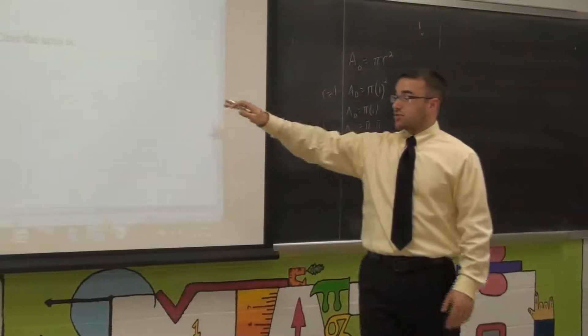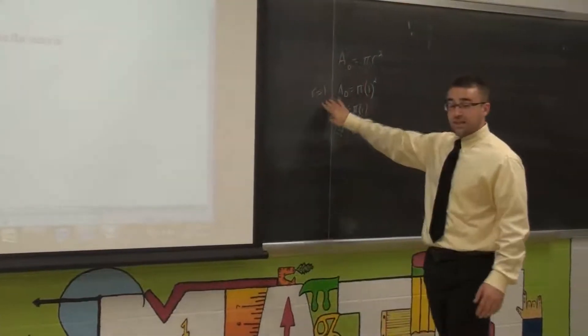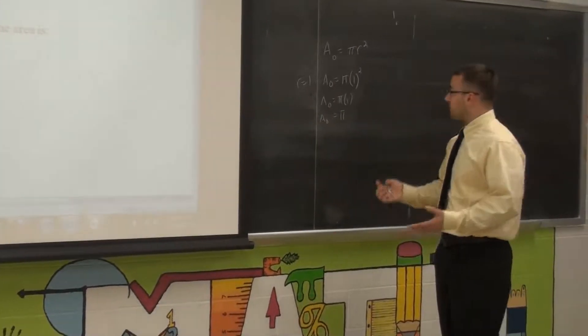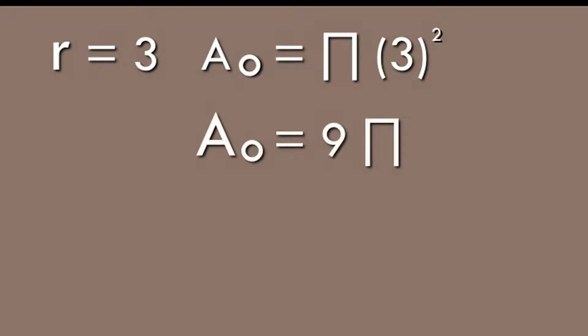Now instead, if the radius of a circle is tripled, well if I triple the radius of one, I'm merely multiplying it by a factor of three. So let's look what happens when I have a radius of three. So my area of my circle now becomes pi times three squared. Three squared, three times three is nine, I have nine pi.